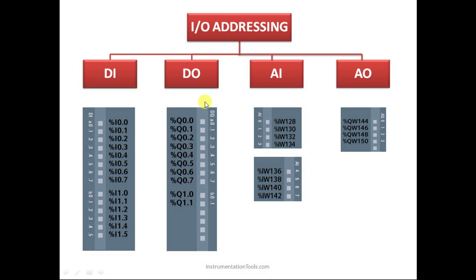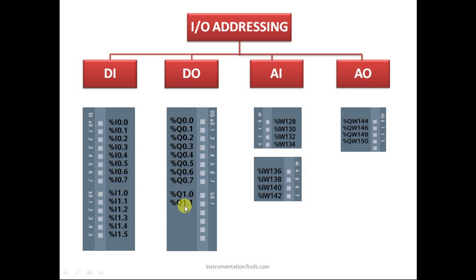For output addressing in Siemens PLCs, output is not represented by 'O' — instead we use 'Q'. The format is Q0.0, Q0.1, Q0.2, and so on. Again, from 0 to 7 the 8 bits complete one byte, after which the byte number updates. This is the output addressing format used in Siemens PLCs.